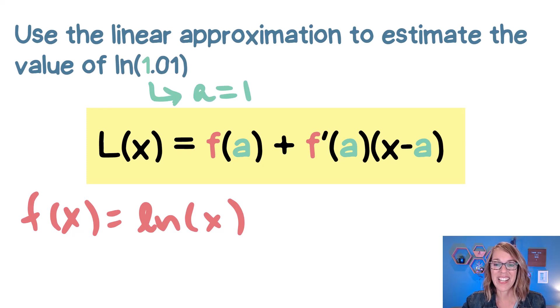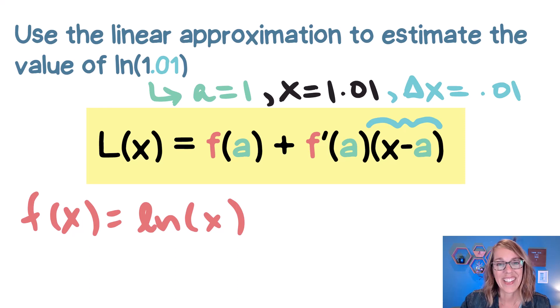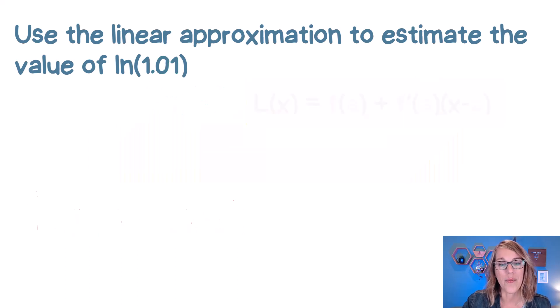The next thing that we need is our X value. The X value, this is what we're going to be evaluating. The X value is 1.01. And then finally, just in case you need it, that delta X is the difference between X and A, the difference 0.01.